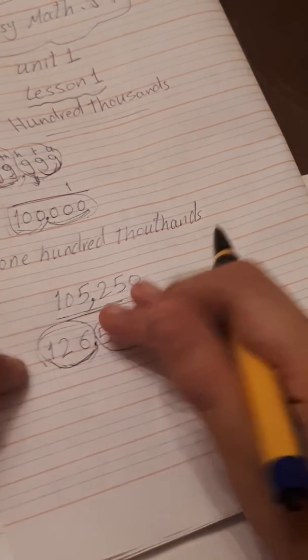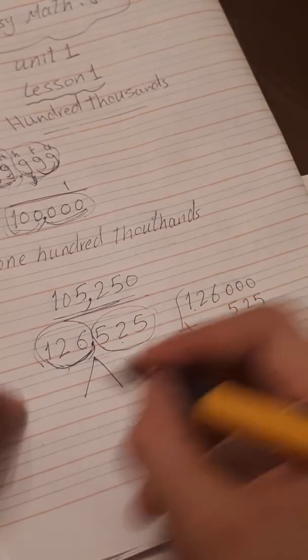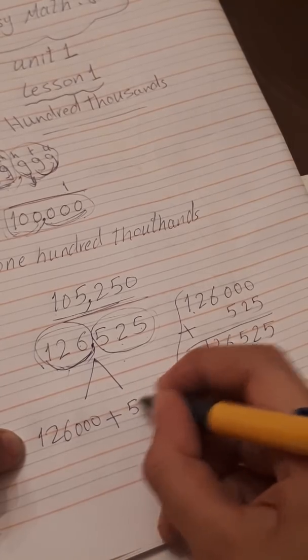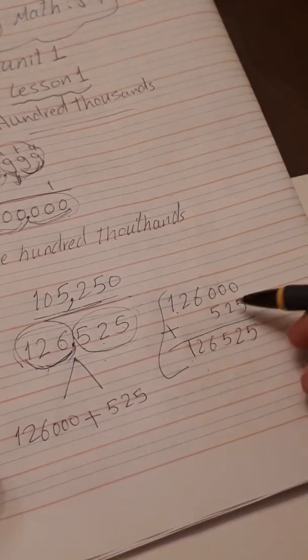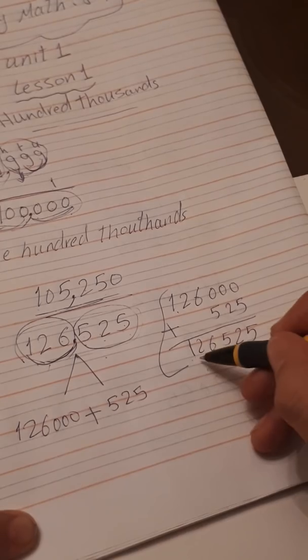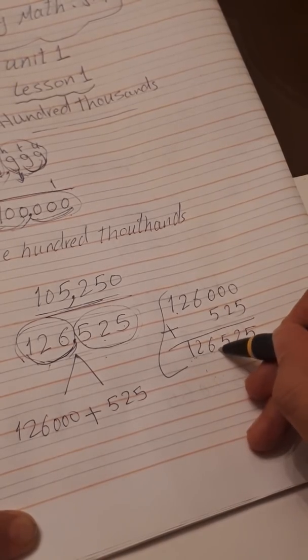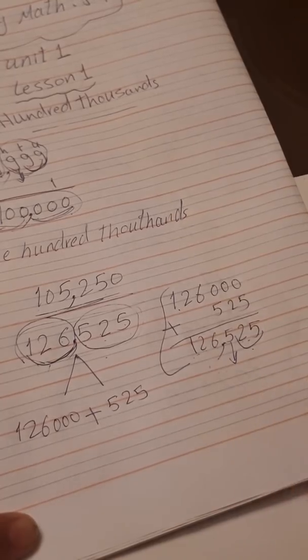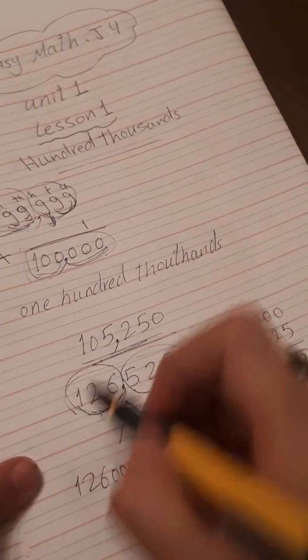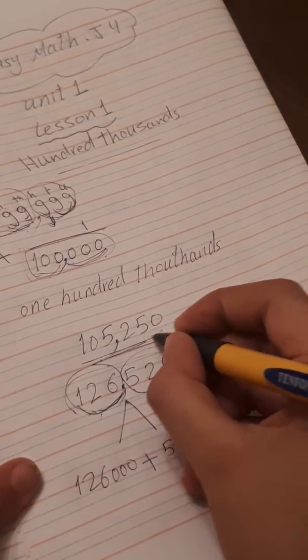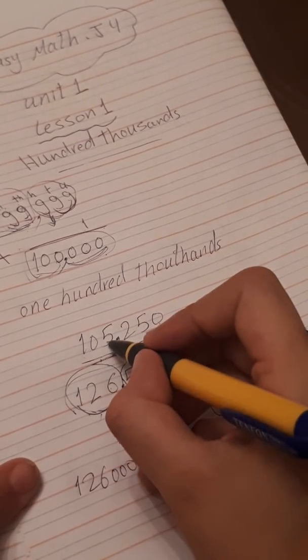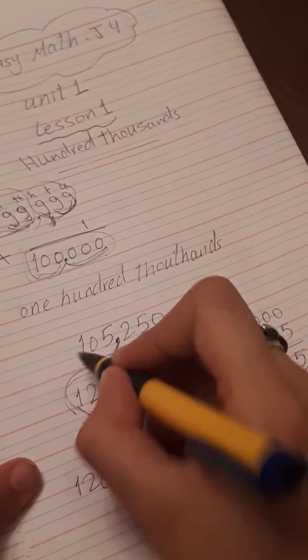This number forms from 126 thousands and 525. If we add this number, it will be 126 thousands and 525. Now read this number. We will divide it also - units, tens, hundreds, then thousands, ten thousands, and hundred thousands. It will be 105... 105 thousands.